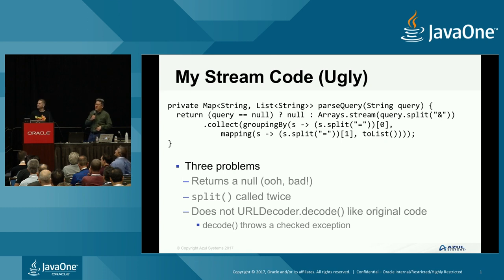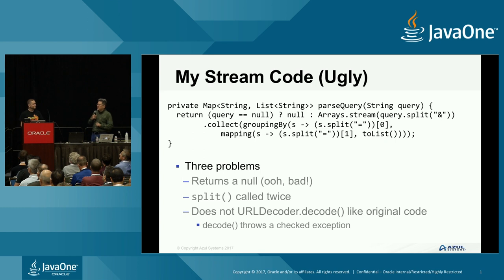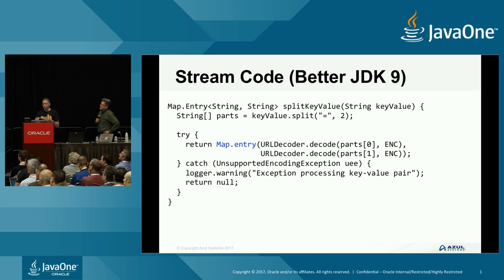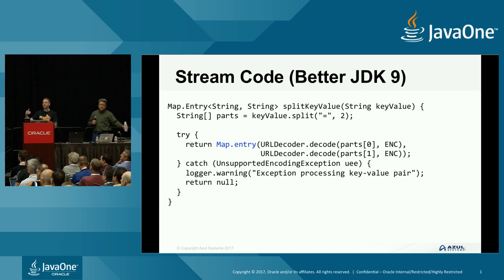Also, the original code had a regular expression in the split command which slows it down quite a bit, because all it's doing is matching a single character. There's actually a fast path in the split method - if it's splitting on a single character, it goes through a completely different section of code that bypasses all the expensive regular expression processing. So after a bit of discussion with Stuart, I came up with a better approach: extract some of the code out into a method, split the key and value, use URLDecoder.decode and deal with the exception in that method.